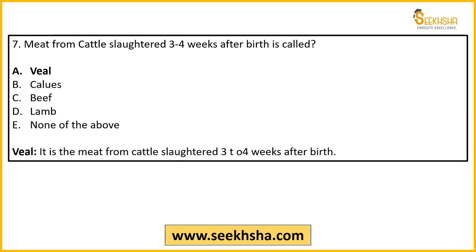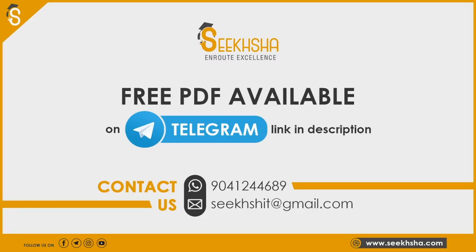The right answer is Option A — veal. It is the meat from cattle slaughtered 3 to 4 weeks after birth. Besides veal, I'll frame questions on calus, beef, and lamb in the next video, which will probably be uploaded today. So this was the last question. If you haven't subscribed to the channel yet, please do. PDF files are being shared on Telegram — all updated PDFs are available there, download them. Take care and see you in the next class, bye-bye.